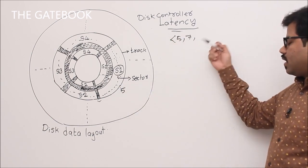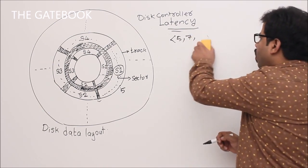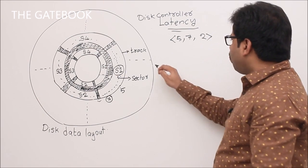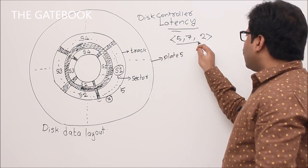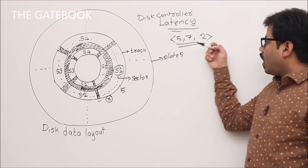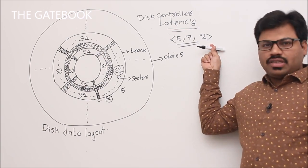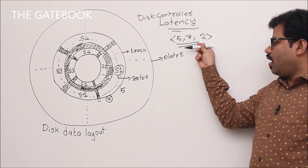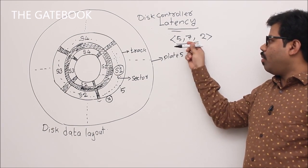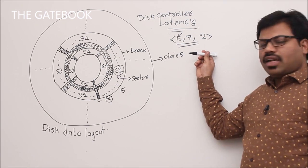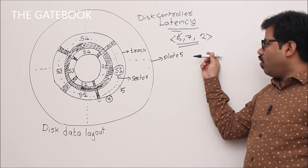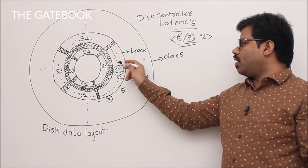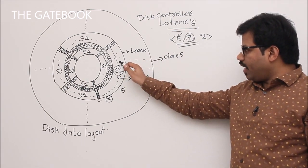Initially the I/O head is placed at some position. Since we're working with plate 5, the corresponding read/write head is enabled. That head is then slowly moved to track 7. The disk controller manages this movement to bring the head to the correct track.